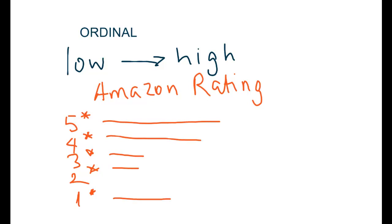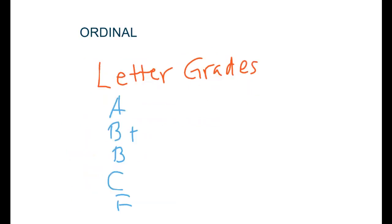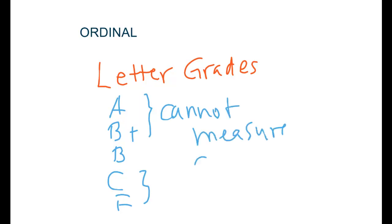Another great example is letter grades: A, B+, B, C, F, and so on. We know that there is a difference between A and B+ and also between C and F. However, we cannot measure the real difference between these grades because these are letter grades — we just know that one is better than the other. These differences are not measurable, and that's the attribute of the ordinal variable.